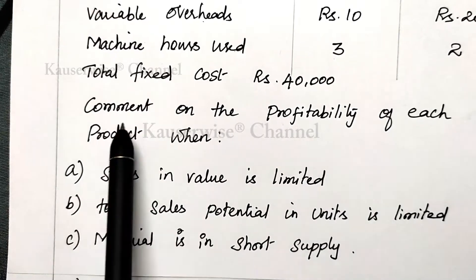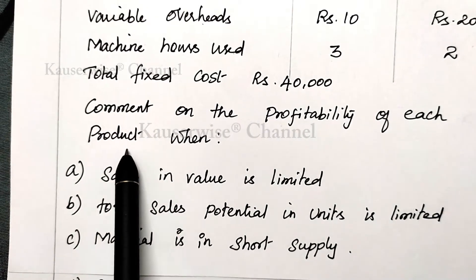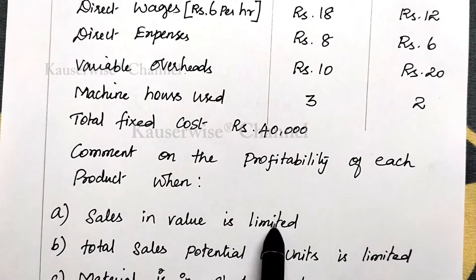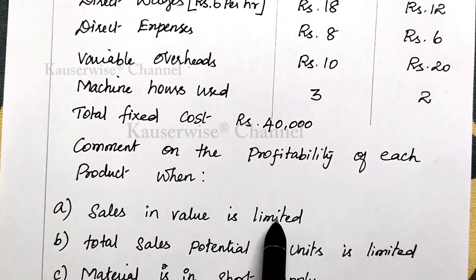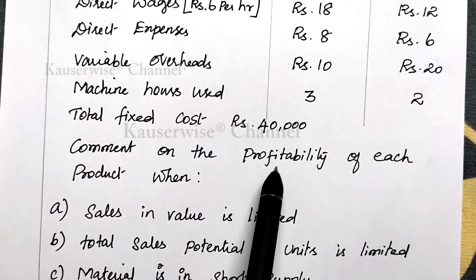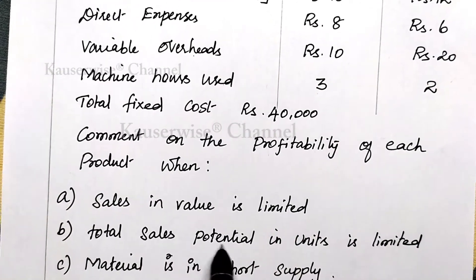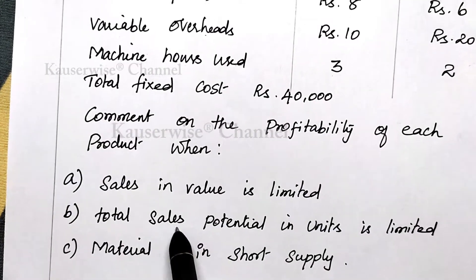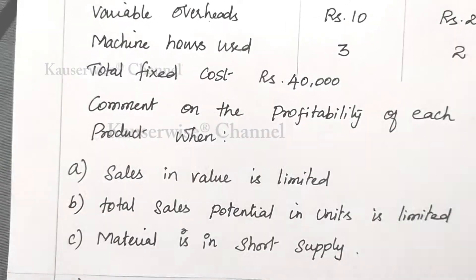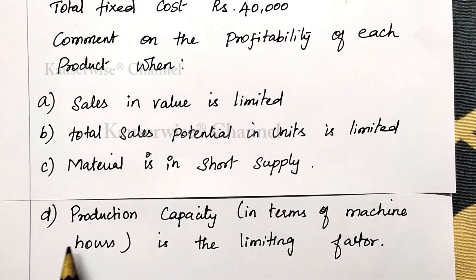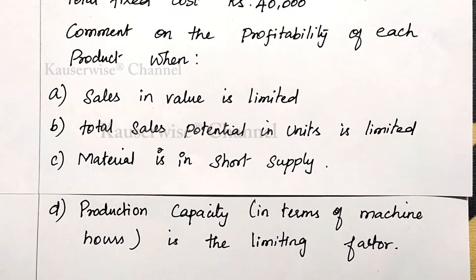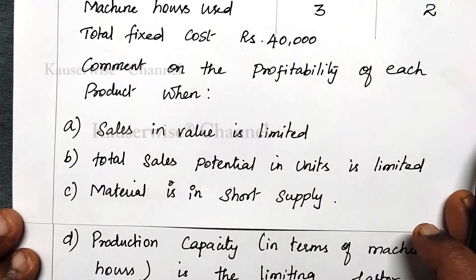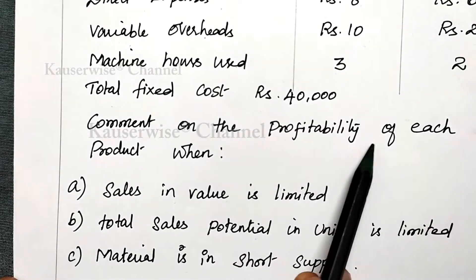With this information, they ask you to comment on the profitability of each product X and Y under four different limiting factors: first, when sales in value is limited; second, when total sales potential in units is limited; third, when material is in short supply; and fourth, when production capacity in terms of machine hours is the limiting factor.